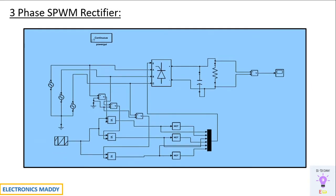This is the MATLAB model of a three-phase SPWM rectifier. We have a three-phase universal bridge based on thyristors and a three-phase source where each single-phase source is displaced by a 120-degree phase shift, consequently producing three-phase output. This is compared with a carrier signal which is basically a sawtooth generator — you're comparing the sinusoidal signal with the sawtooth generator, which has a higher frequency than the fundamental signal, basically 50 Hz.